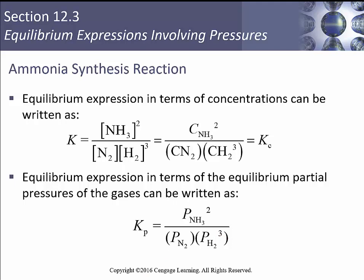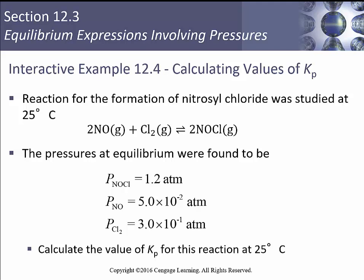A reaction for the formation of nitrosyl chloride was studied at 25 degrees C. Our balanced chemical equation is that we've got 2NO(g) + Cl2(g) giving us 2NOCl(g). The pressures at equilibrium were found to be 1.2 atmospheres, 5 times 10 to the minus 2 atmospheres, and 3.0 times 10 to the minus 1 atmospheres. We're going to calculate the value of KP at this reaction at 25.